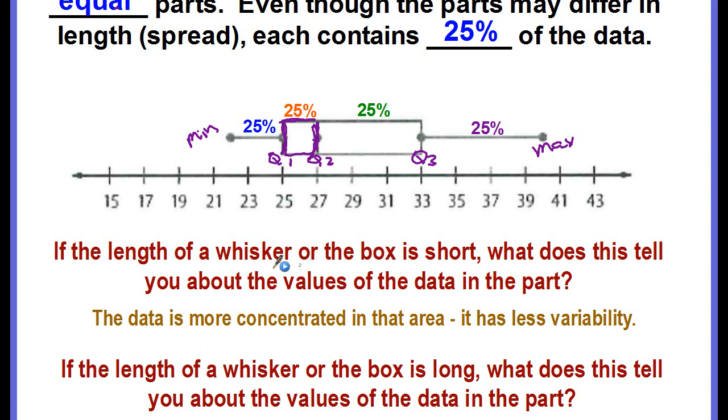But if the length of the whisker or the box is long, what does it tell us? It tells us that the data is less concentrated, it has more variability.